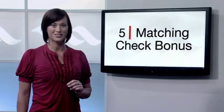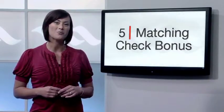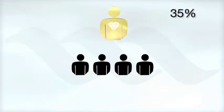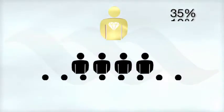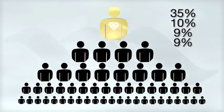The fifth way to earn income with the max plan is through the matching check bonus. You are paid a percentage of the team commissions earned by people on your team, up to 7 levels deep depending on your status. To demonstrate the payout, let's say you enrolled as a diamond pack associate, have maintained the required personal volume and have advanced to the gold level. You'll receive up to 35% of the total team commissions earned by everyone on your first level, that's people you've personally enrolled. You'll also receive up to 10% of the team commissions earned on your second level, up to 9% on your third level and up to 9% on your fourth level. Remember, this is income earned in addition to your fast track commissions and pay team commissions.